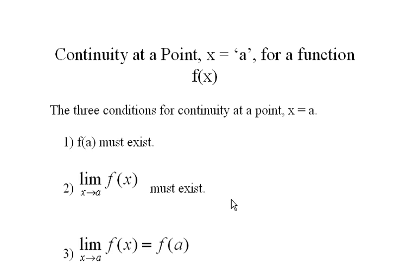The second condition is that if f of x is continuous at some point a, then the limit of f of x as x approaches a must exist. And the third, the necessary and sufficient condition is that if a function f is continuous at a, then the limit of f of x as x approaches a has to not only exist but equal f of a.